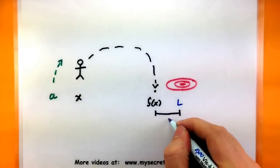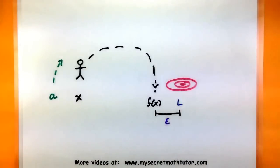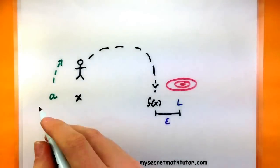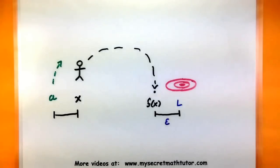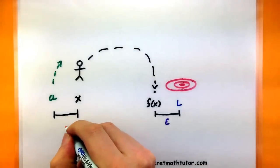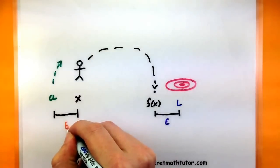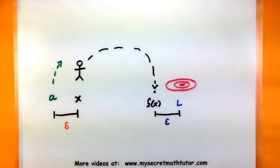So our distance from our function and the bullseye L, we will call that an epsilon. And the distance that you end up standing from the sweet spot, well, we'll call that our delta.